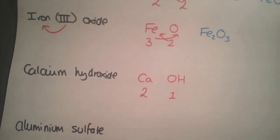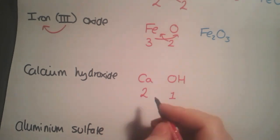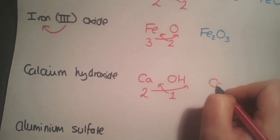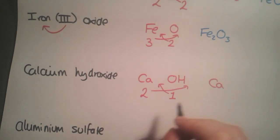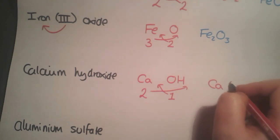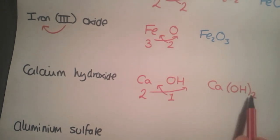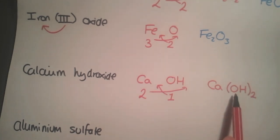You must remember that OH is grouped together, so must be treated as one entity. We swap over our valencies to get Ca, and OH needs to go in brackets. If we didn't use brackets, CaOH2 would imply one oxygen and two hydrogens, when in fact we have two oxygens and two hydrogens: Ca(OH)2.